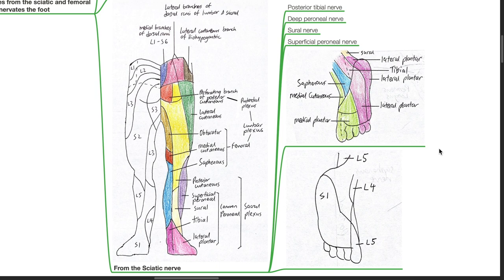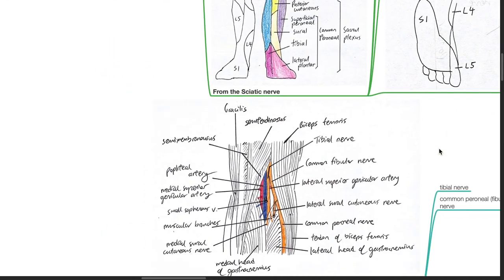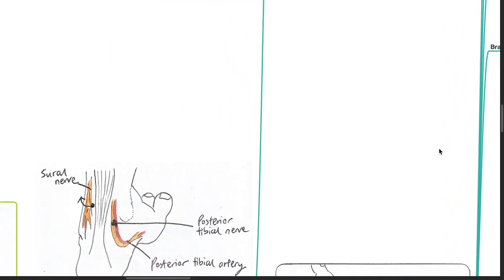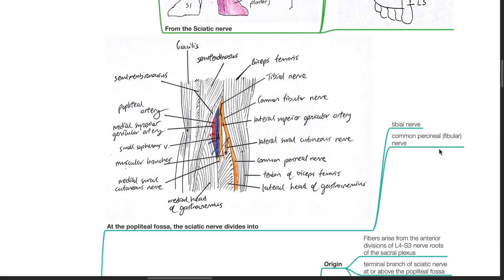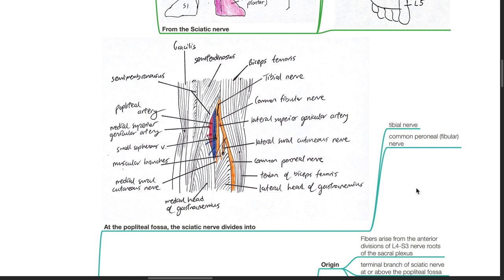From the sciatic nerve branch the posterior tibial nerve, deep peroneal nerve, sural nerve, and superficial peroneal nerve. At the popliteal fossa, the sciatic nerve divides into the tibial nerve and common peroneal nerve, also known as the common fibular nerve.